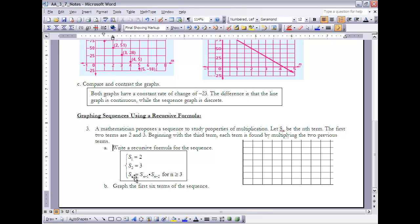If I'm finding the third term when n is 3, I'm going to take the second term times the first term. If I'm finding, say, the tenth term, I'm going to take the ninth term times the eighth term. So I'm always taking the two previous terms and multiplying them together to get the next term.